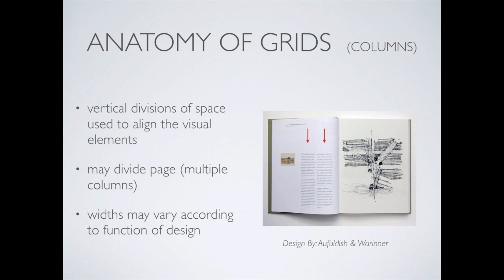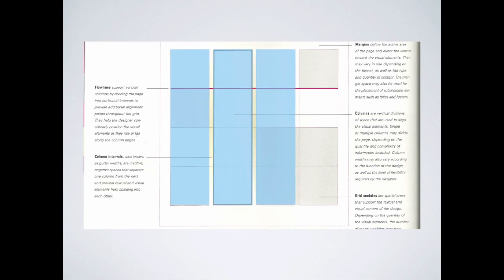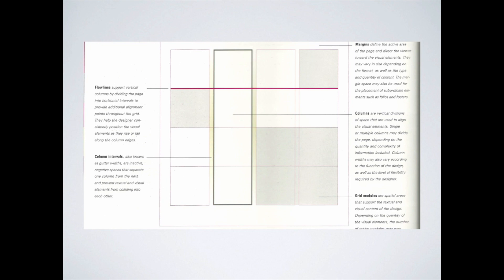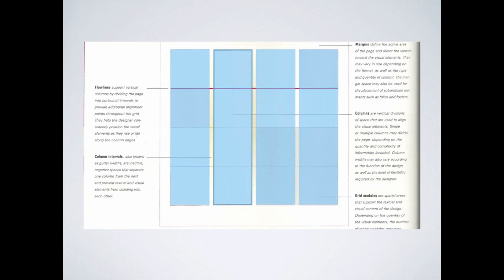A column is fundamentally a vertical division of space on the page used to align elements. We could have something as simple as one column — like an English or history paper with one big block of text. But we could have multiple columns; think about magazines or newspapers with lots of skinny columns. The widths vary according to the function of the design. These background images are all out of the recommended textbook, the Layout Workbook by Kristen Cullen, which does a great job explaining all of these concepts.